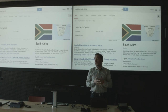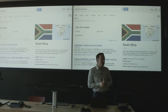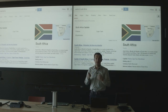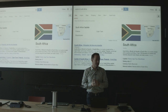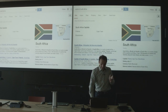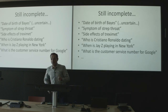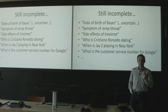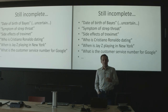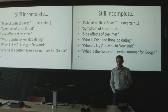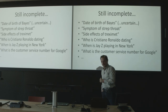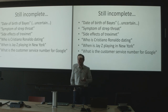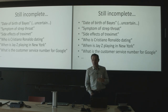This is called the Knowledge Graph. At Google, it contains approximately half a billion entities and five to six billion links connecting them. Despite its size, the Knowledge Graph is still highly incomplete. Google doesn't know the date of birth of Bayes, the symptoms of strep throat, the side effects of Treximet — a drug used to treat strep throat — who Cristiano Ronaldo is dating, when Jay-Z is playing in New York, or what the customer phone number for Google is.